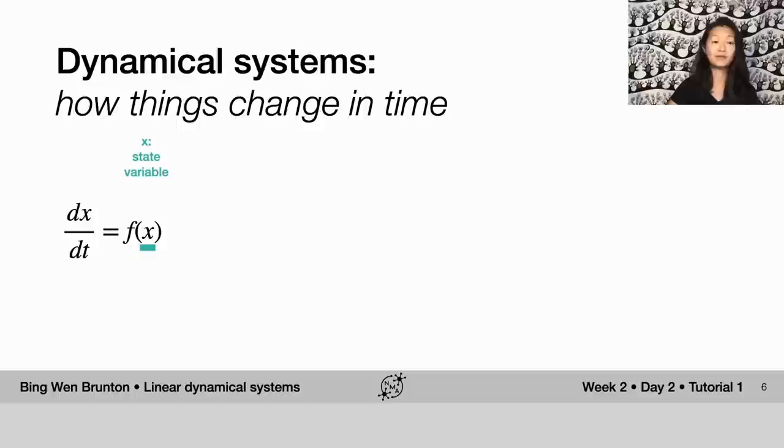And so x here is our state variable. It's the thing that we want to keep track of, whatever it is that's changing. So it could be the firing rate of a neuron or something like that. And we're expressing it in general as just some function of x. So the rate of change of x is a function of x.